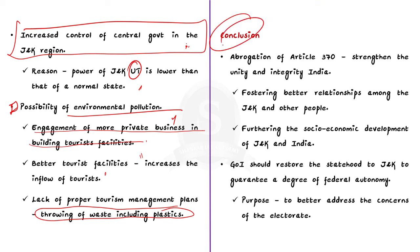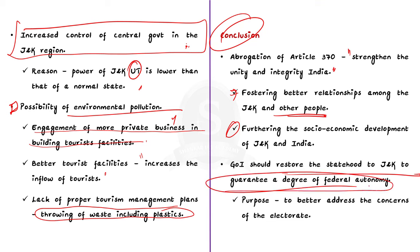Now let us see the conclusion. In the conclusion, we can give a balanced view: there is no doubt that the abrogation of Article 370 will strengthen the unity and integrity of India. The abrogation has brought the people of J&K closer to the other state people, fostering better relationships and furthering socio-economic development of both Kashmir and India. But the central government should soon restore statehood to J&K in order to guarantee a degree of federal autonomy, which will help the J&K government better address the concerns of the electorate. In this discussion, we saw about Article 370, its abrogation, and the pros and cons associated with it.